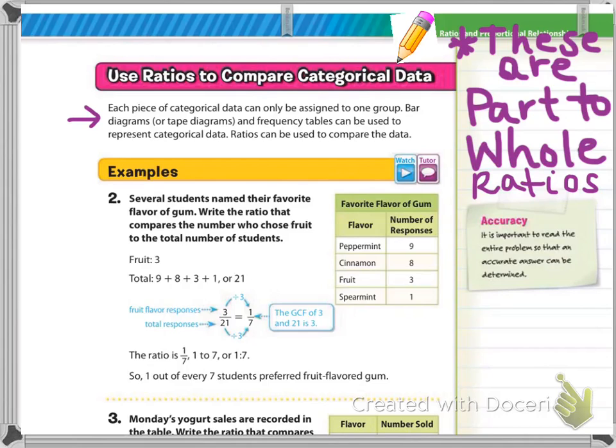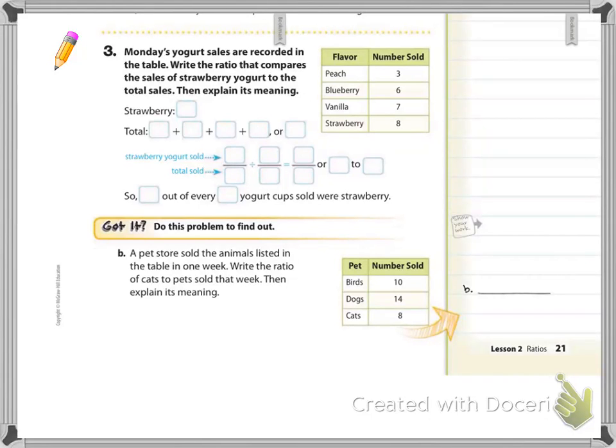This is where we'll start using the tables and diagrams that are mentioned in the inquiry lab. With example two, it says several students named their favorite flavor of gum. You can see the table off to the right labeled with flavor: peppermint, cinnamon, fruit, spearmint, and the number of people who respond.